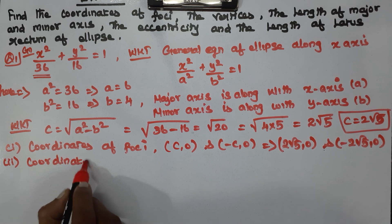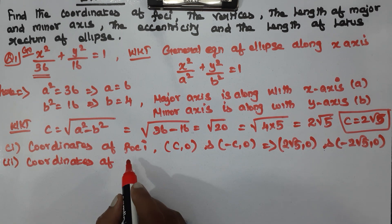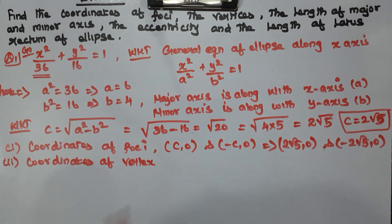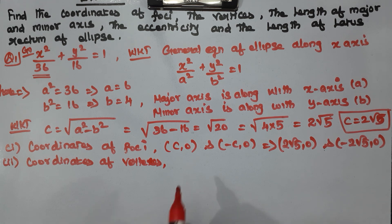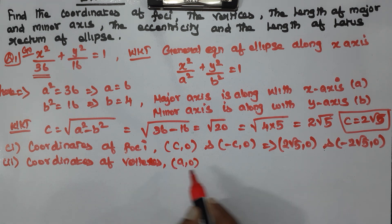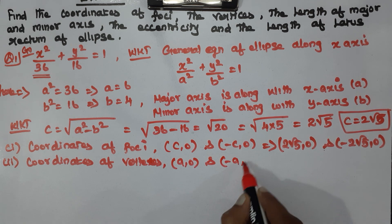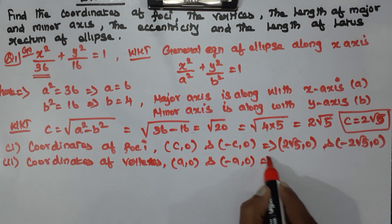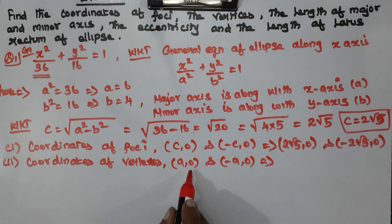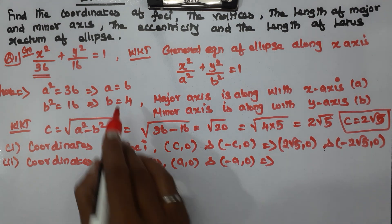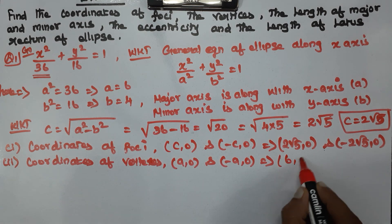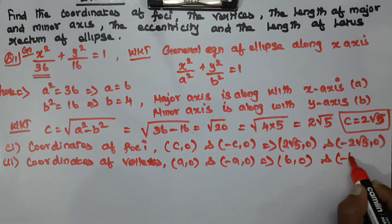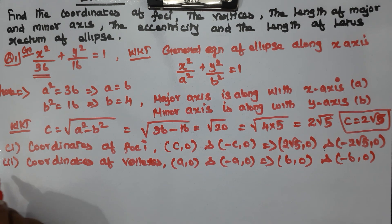Number 2: coordinates of vertices. The coordinates of vertices are (a, 0) and (−a, 0), which gives (6, 0) and (−6, 0).